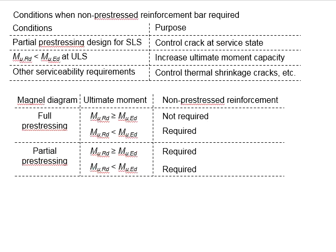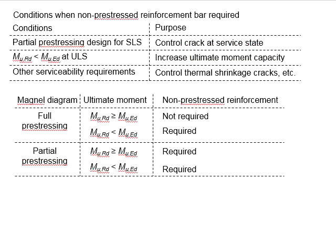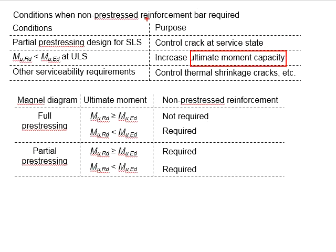Next, it is also required when the tendon itself alone is unable to generate sufficient resistance of moment at the ultimate limit state to resist the moment load acting on the member. In this case, the non-prestressed reinforcement bar will help to increase the moment capacity of the member, and it behaves like a typical reinforced concrete member — superimposing the effects of the reinforcement given by this bar and also the tendon of prestressing. The moment capacity of the section can thereby be increased.